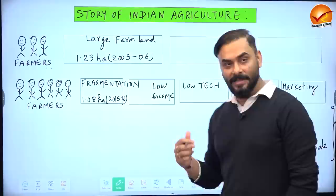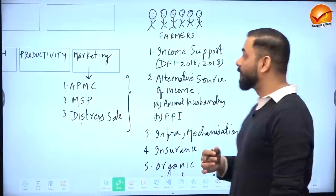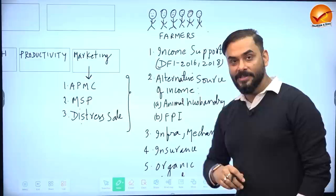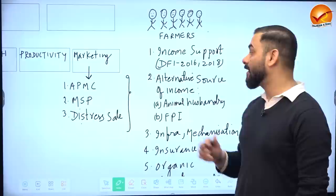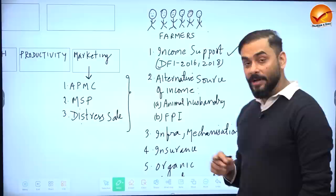To improve the situation, the Government of India created the Doubling Farmers' Income program. A committee was established in 2016 and submitted its report in 2018, talking about different methods of doubling farmers' income in India.